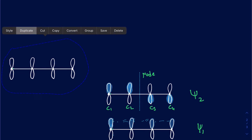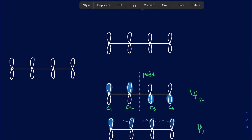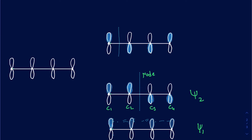We need four molecular orbitals total from our four atomic orbitals. The next possibility increases the number of nodes: the first orbital points up, the second points down, the third points down, and the fourth points up. There is one phase flip here and another flip there — giving us two nodes. This is psi three.